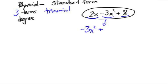And then the 2x, because the x is really to the first power, and then the 8. The number that's all by itself, that's at the end in standard form, is called a constant.